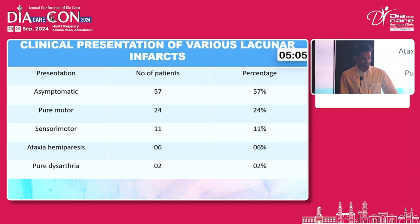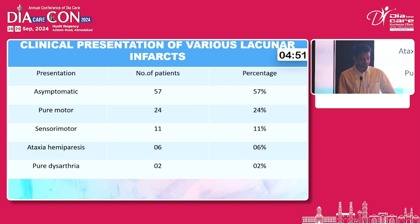Amongst the clinical presentations, most patients were asymptomatic — that is 57% — which is the most important finding in terms of how most patients present. The asymptomatic patients could have non-specific symptoms like headache or giddiness but these are less sustained. Among the major clinical presentations, pure motor accounted for 24% of the total, followed by sensory motor, ataxic hemiparesis, and pure dysarthria.